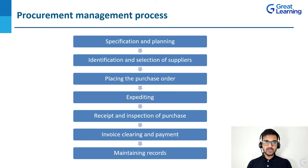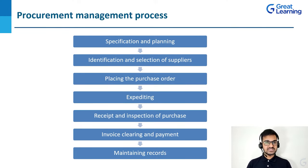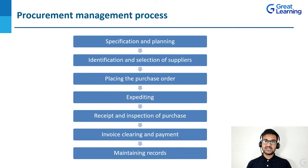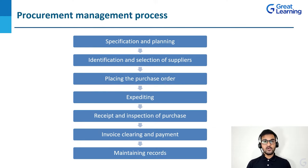These are the steps involved in the procurement management process. We start with specification and planning — planning what exactly is the product or service that we need, what exactly are the specifications of that product. Then identification and selection of suppliers — identifying different suppliers and selecting the best by understanding their pros and cons. Then placing the purchase order, followed by expediting, then receipt and inspection of purchase, then invoice clearing and payment, and finally maintaining records for future projects.